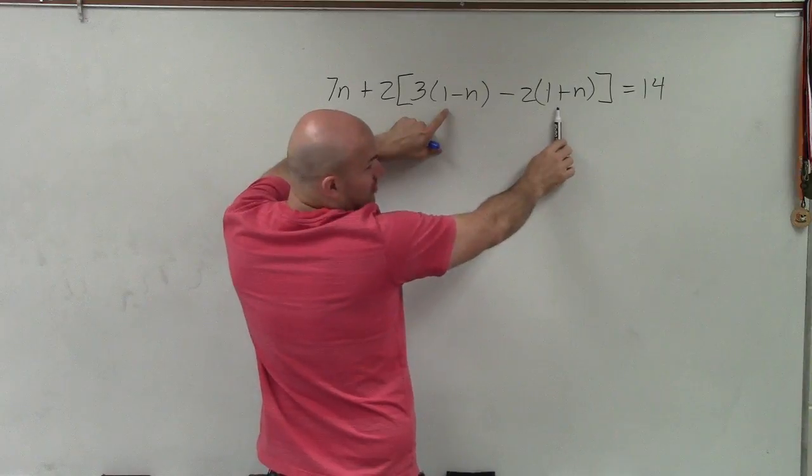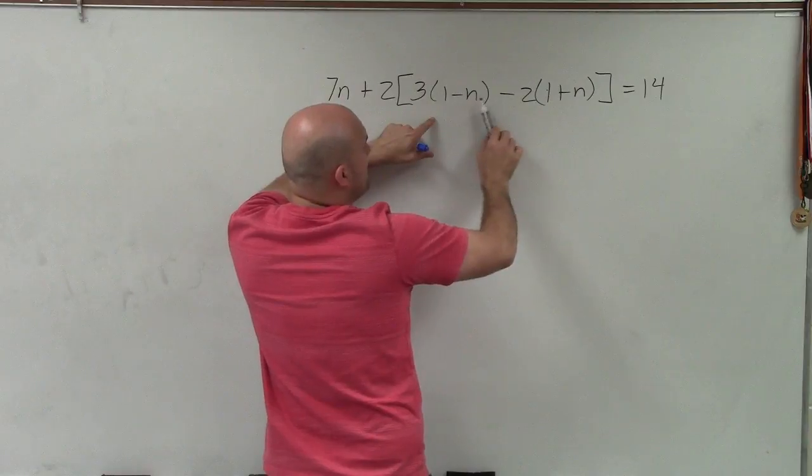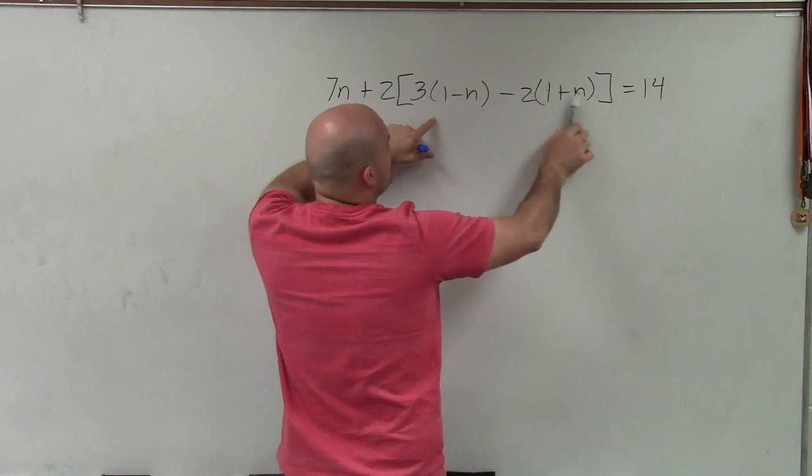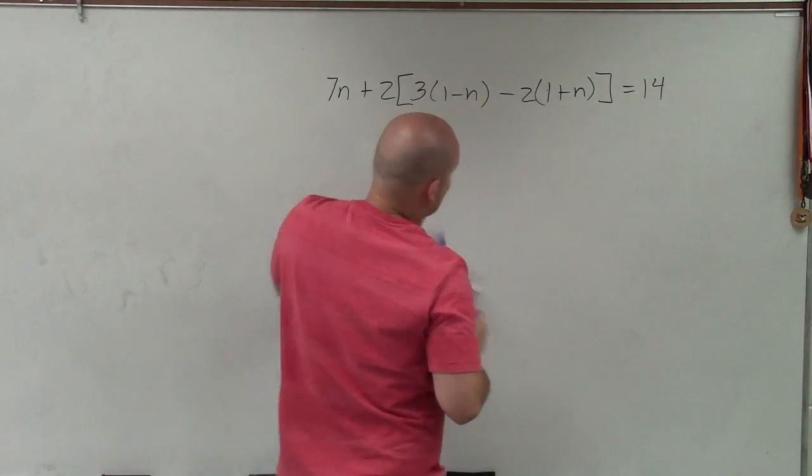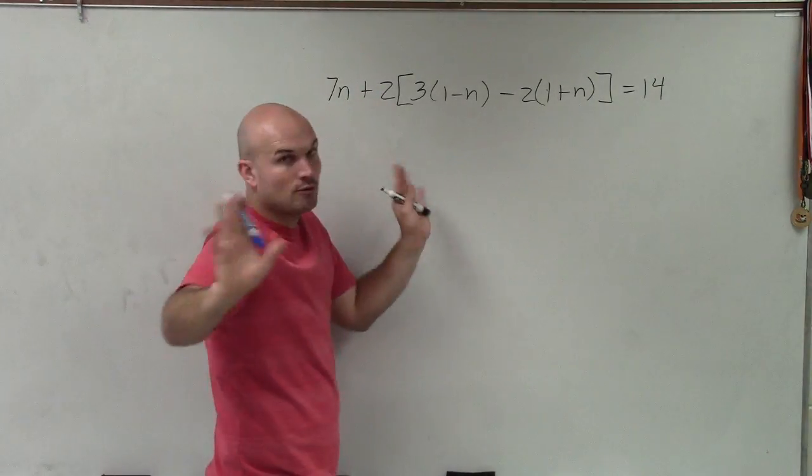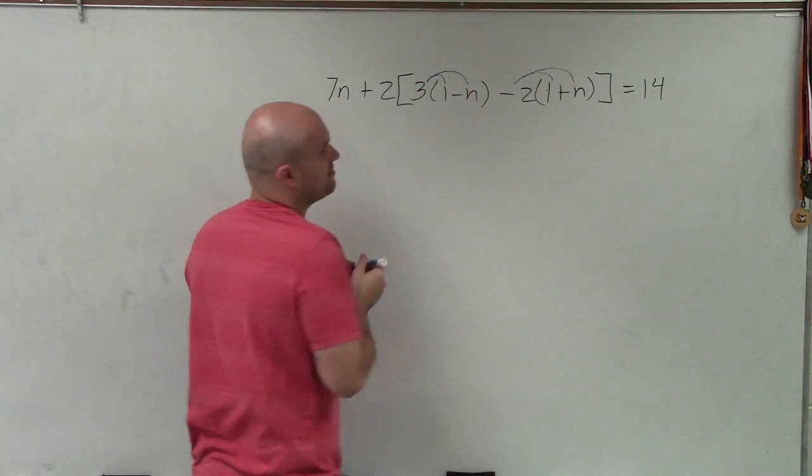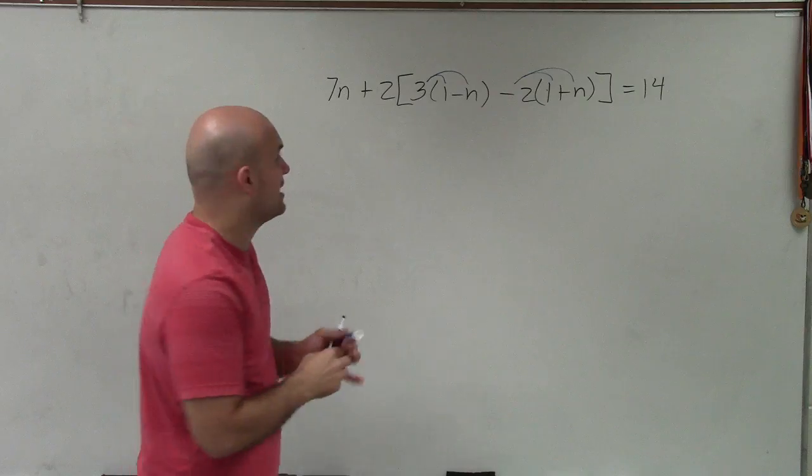So now I work outside. Is there any exponents or powers? No. But I do see I have the product 3 times (1 minus n) and negative 2 times (1 plus n). So I am going to apply that operation first. Everything outside this bracket, I'm not worried about right now.